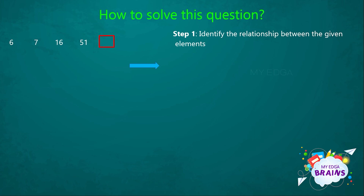So let's check that. We can take the first two elements, that is 6 and 7. Here, when we multiply 6 with 1, we'll get 6. But our second element is 7. So in order to get 7, we have to add plus 1 to 6. That is, 6 × 1 = 6, plus 1 equals 7.